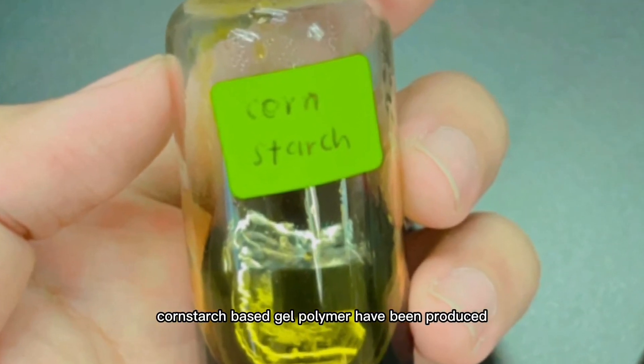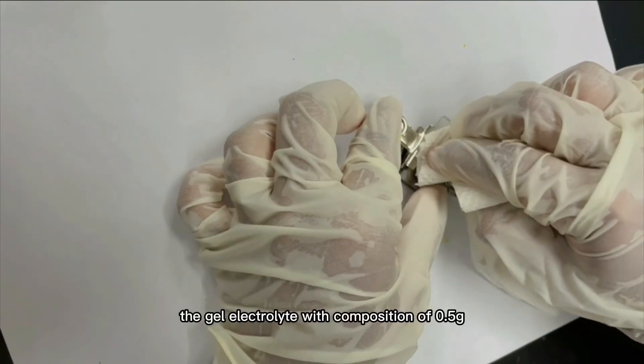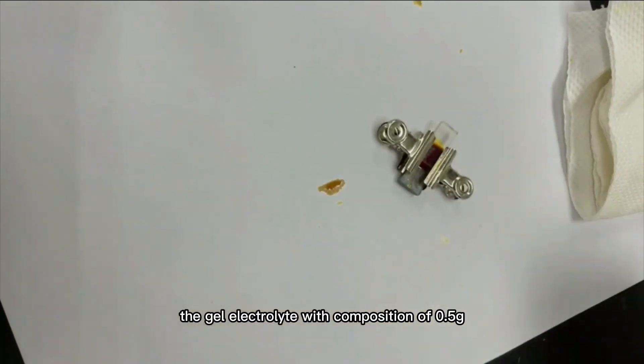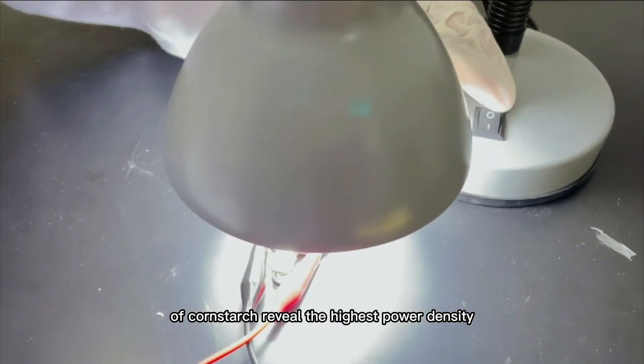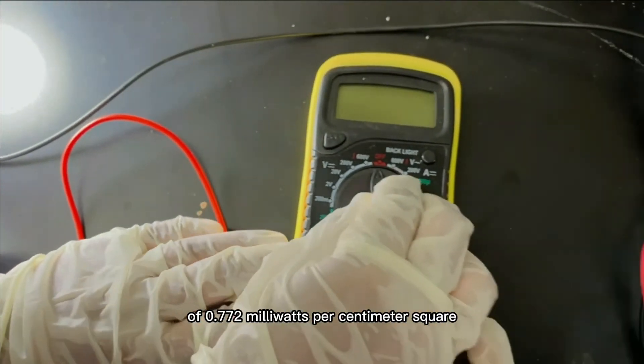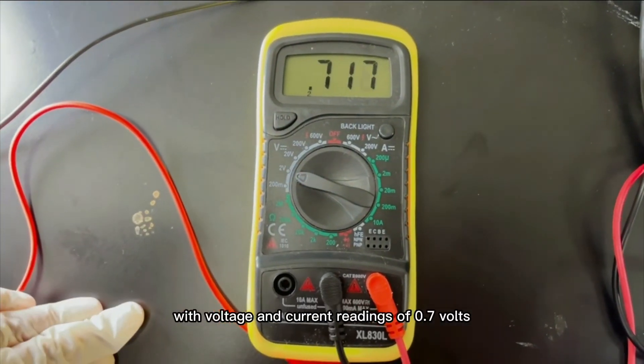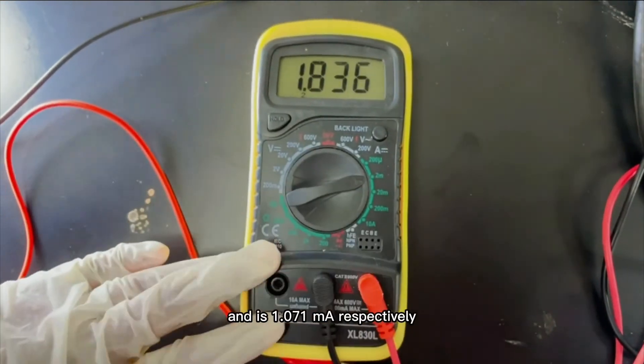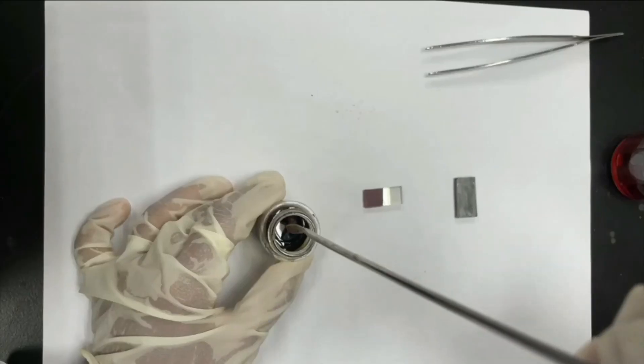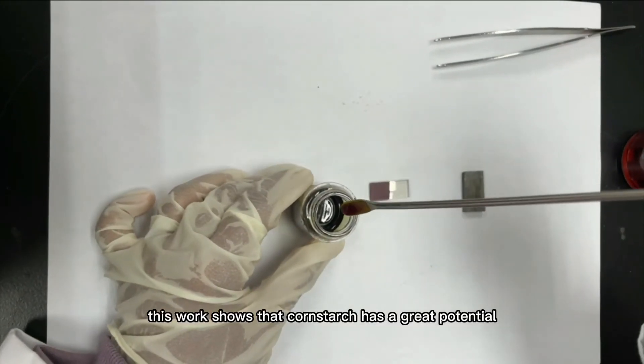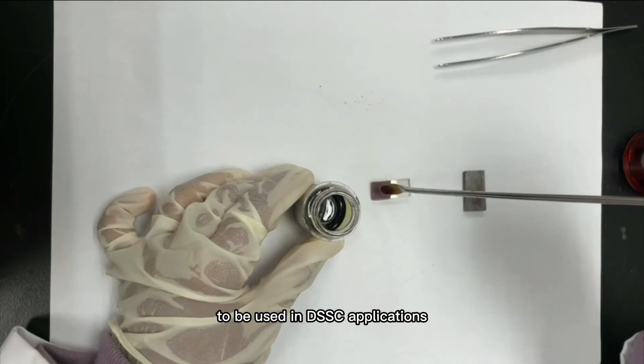Cornstarch-based gel polymer has been produced successfully. The gel electrolyte with composition of 0.5 grams of cornstarch revealed the highest power density of 0.772 milliwatts per centimeter squared with voltage and current readings of 0.7 volts and 1.071 milliamperes respectively. This work shows that cornstarch has a great potential to be used in DSSC applications.